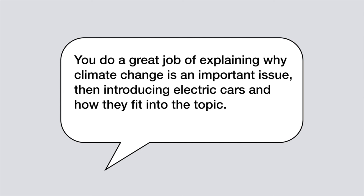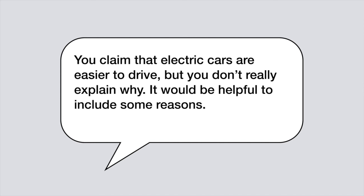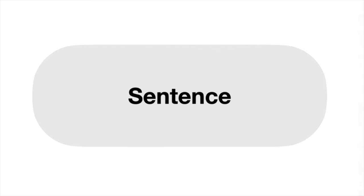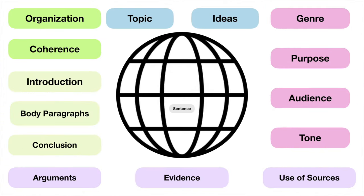Here are some examples of peer review comments that address higher-order concerns: "You do a great job of explaining why climate change is an important issue and introducing electric cars and how they fit into the topic." Or, "You claim that electric cars are easier to drive, but you don't really explain why — it would be helpful to include some reasons." Or, "Since you're writing this for an audience of general readers, it might be helpful to define lesser-known terms like off-peak charging and range anxiety." While lower-order concerns are local issues that only affect a small part of the text, higher-order concerns are global issues that can impact the text as a whole. Focusing on these higher-order concerns is crucial for helping writers see their own text in a new way.